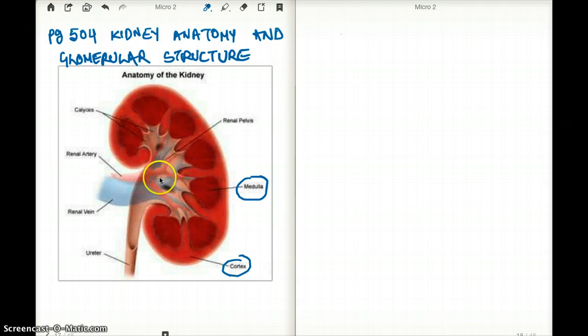And then this area where the blood comes from the artery and the vein, this particular area is the renal pelvis. And this has some clinical correlation, and I'll talk about them in a bit.